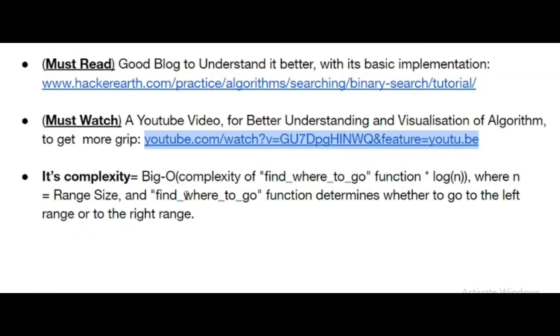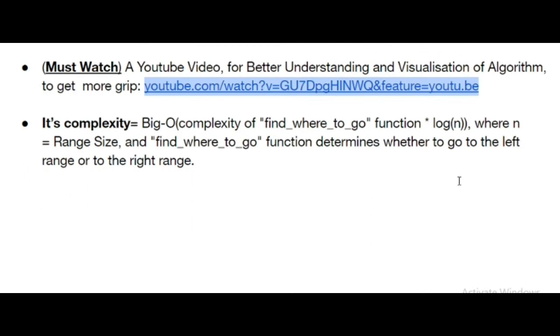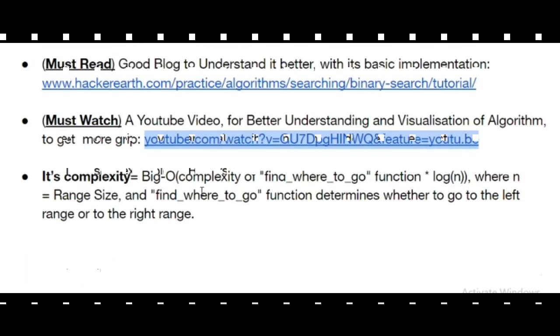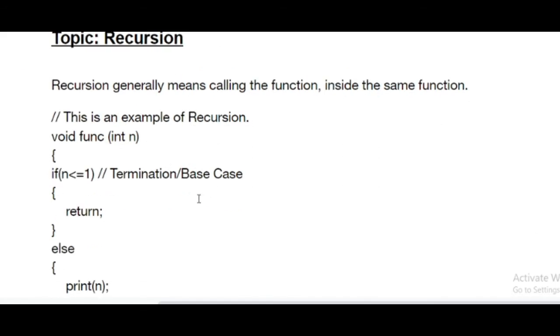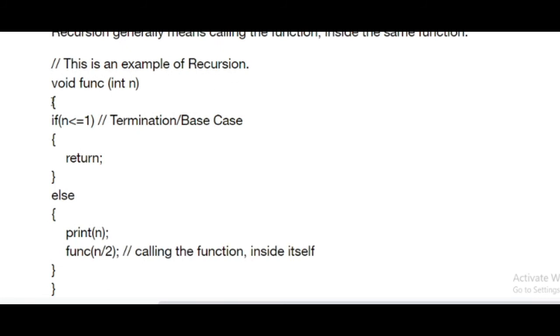Complexity. Big O. Complexity of find where to go function is log n, where n is equal to the range space. The find where to go function determines whether to go to the left range or right range. This is Big O complexity. This topic is recursion. Recursion means doing something smartly actually, in much easier sense. Like every level, like a domino. What we do - we just move one matchbox and all the matchboxes fall down. That's how recursion works.